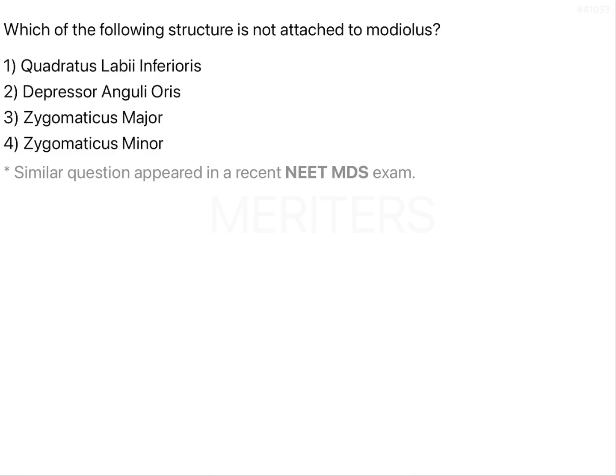Which of the following structures is not attached to the modiolus? Option 1: quadratus labii inferioris, 2: depressor anguli oris, 3: zygomaticus major, and 4: zygomaticus minor. This is an important question because it appeared in the recent NEET MDS exam, and it's a simple theoretical question with a single answer.